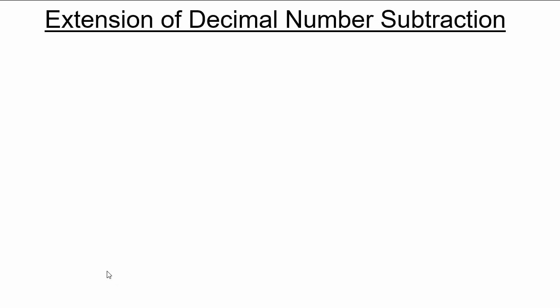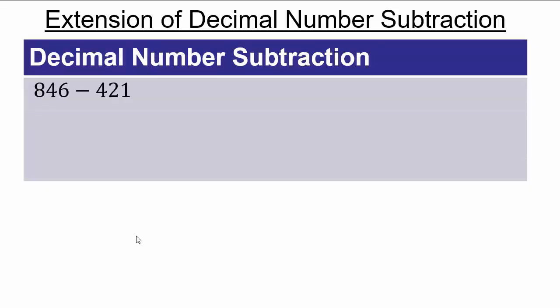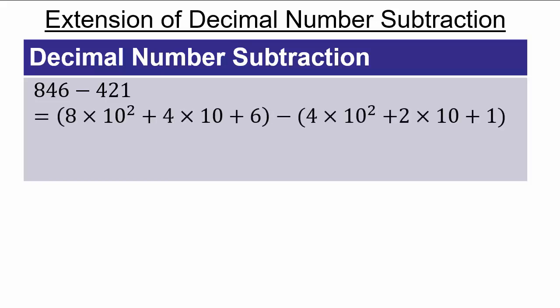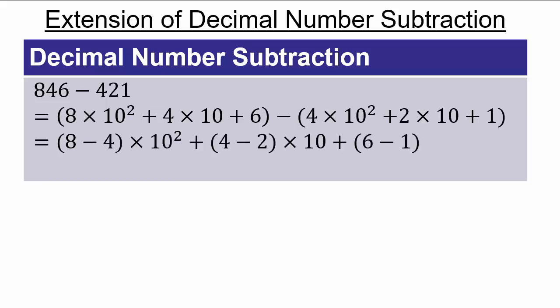Let's use similar principles to extend decimal number subtraction. For 846 minus 421, written in expanded form we have 8 hundreds, 4 tens, and 6 units, taking away 4 hundreds, 2 tens, and 1 singleton. We do term-by-term subtraction: 8 minus 4 hundreds, 4 minus 2 tens, and 6 minus 1 singletons — grouping by place value horizontally. The answer is 4 hundreds, 2 tens, and 5, which is 425.